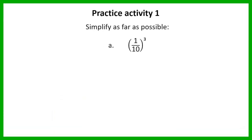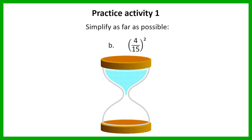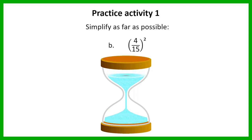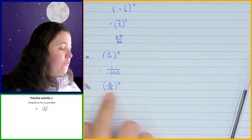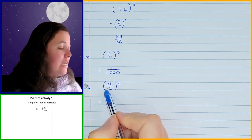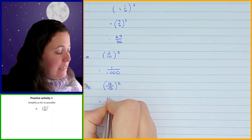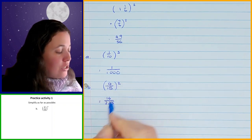Next example, question B: we've got 4 over 15 squared. Again, it's not a mixed number, so I don't have to convert anything. I can go straight ahead and square. So I can say 4 squared is 16 over 15 squared, which is 225. So that's what you should have got for question B.